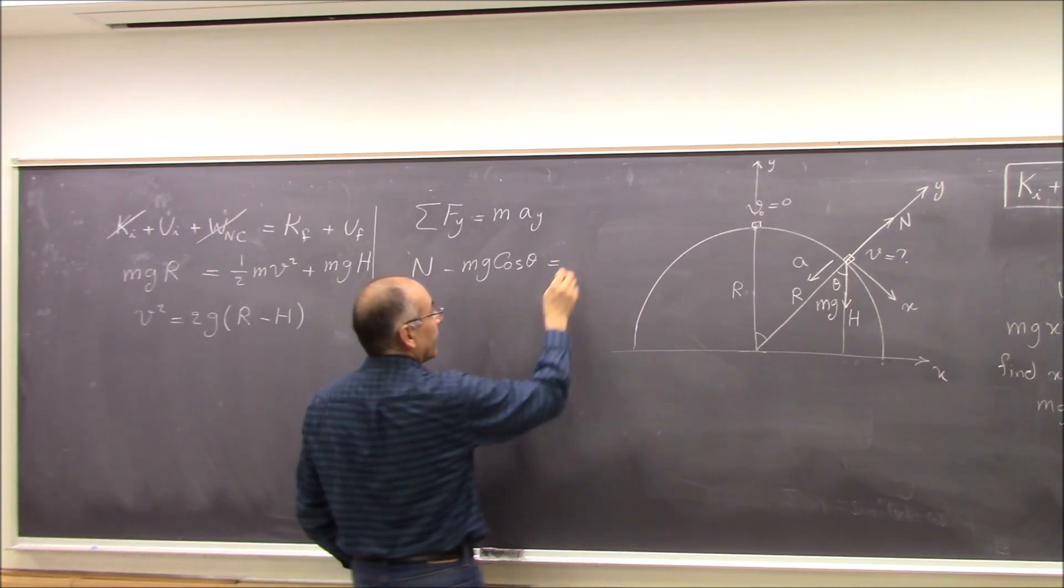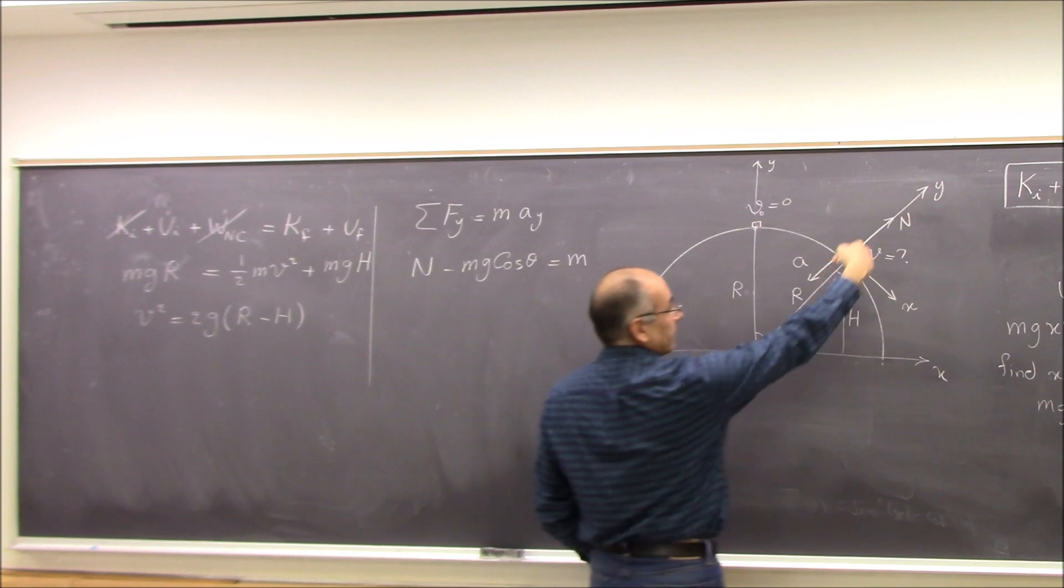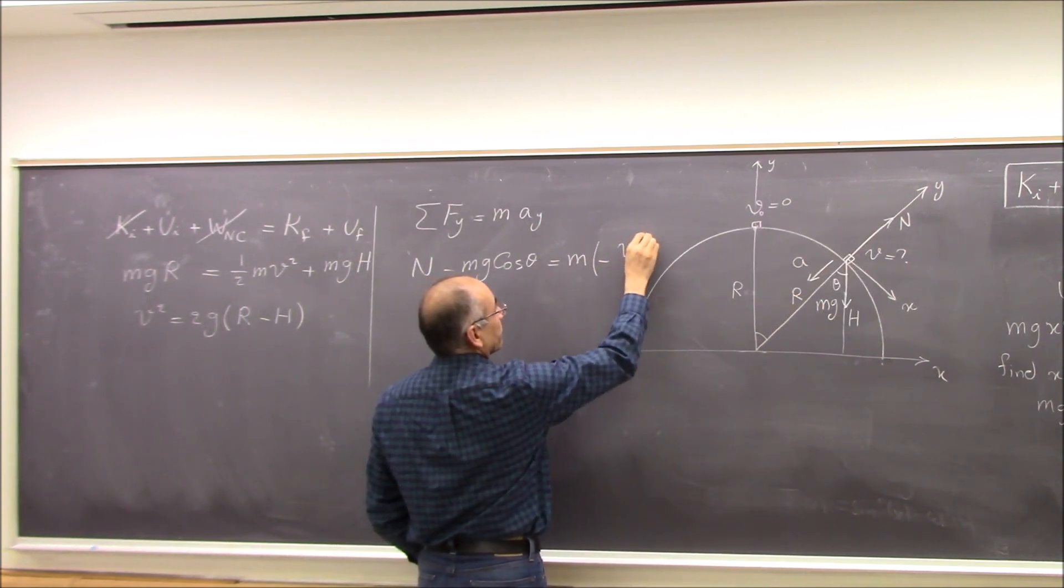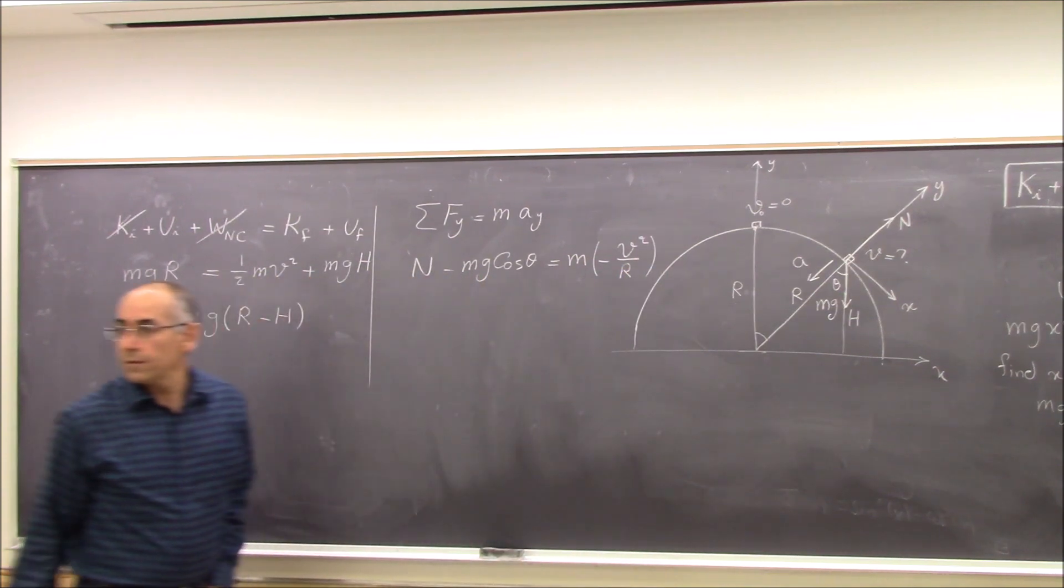M Ay means M times the Y component of A. Because A is in negative Y direction, I put negative of magnitude of acceleration. That make sense?